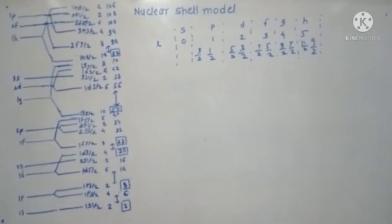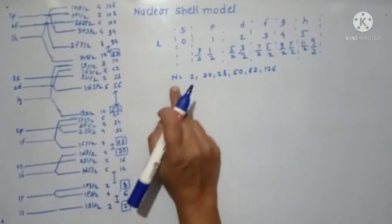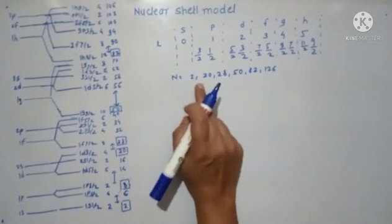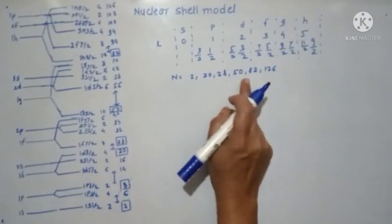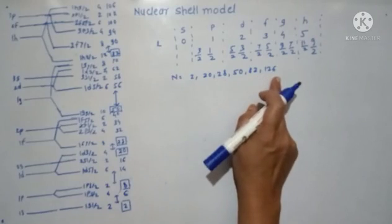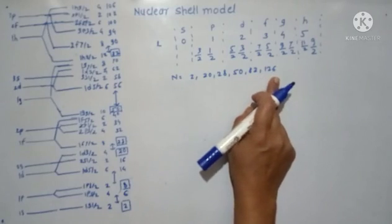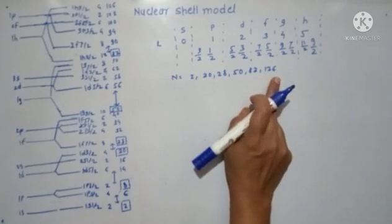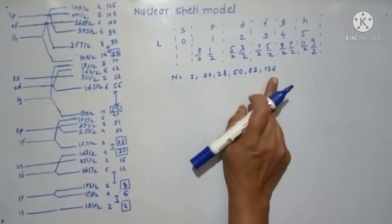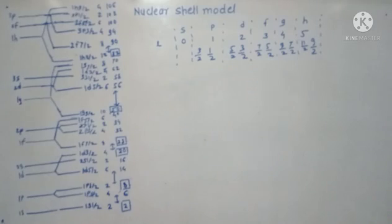In last lecture, we have seen that nuclei with neutron numbers 2, 8, 20, 28, 50, 82, and 126 have shown more stability than their neighbors.